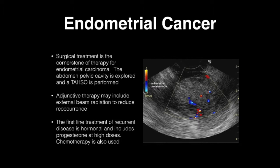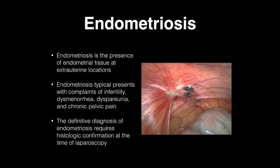The next topic is endometriosis, which is simply the presence of endometrial tissue where it shouldn't be, or at extra-uterine locations. Endometriosis typically presents with complaints of infertility, dysmenorrhea, dyspareunia or painful intercourse, or chronic pelvic pain. The pain is typically cyclical with menstrual cycles because it is hormone-responsive tissue.